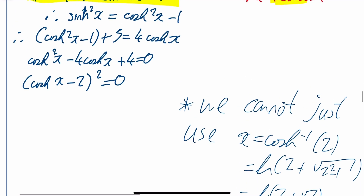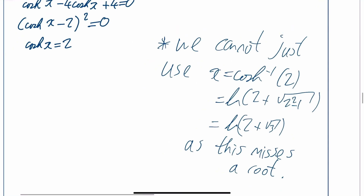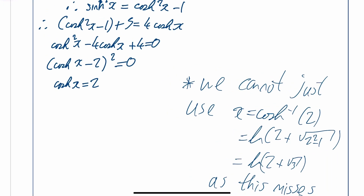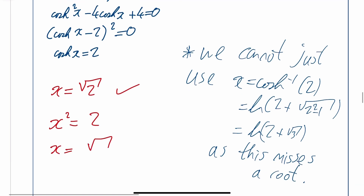Once you have hyperbolic cosine of x equals 2, you cannot simply apply inverse hyperbolic cosine and get one answer — you would miss a root. This is similar to x squared equals 2: you need plus or minus root 2, not just one root. You need to reverse the process of hyperbolic cosine properly using the exponential definition.